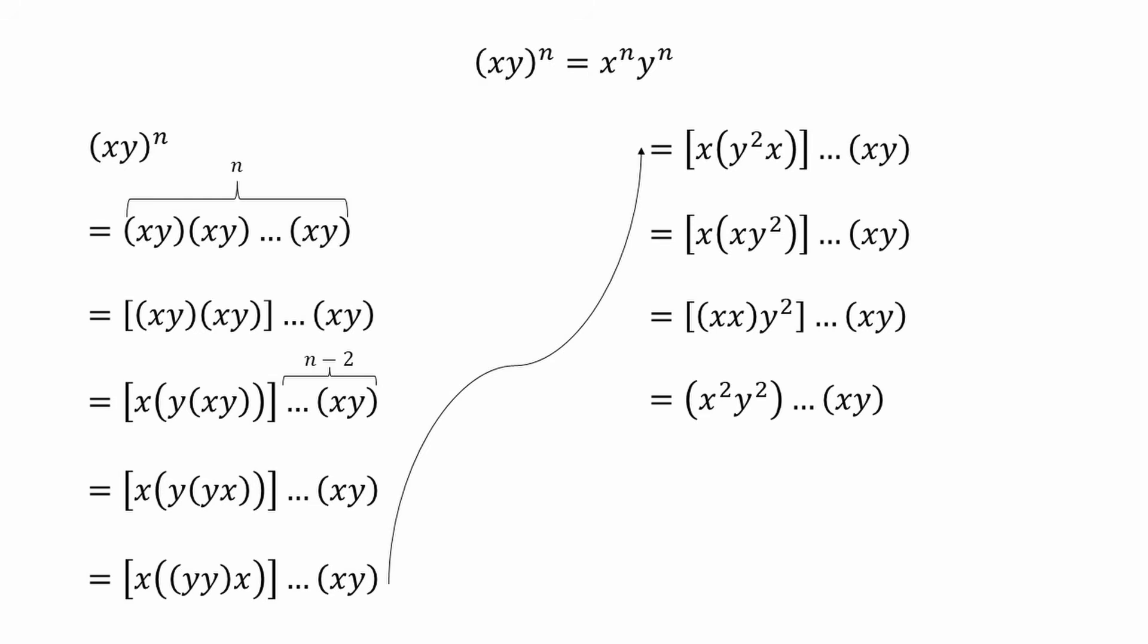Similarly, I can insert a square parentheses to include x^2 product y^2 and the first xy, then repeat the steps above. We will get x^3 product y^3 with n minus 3 number of xy's follow.